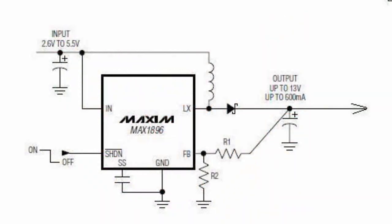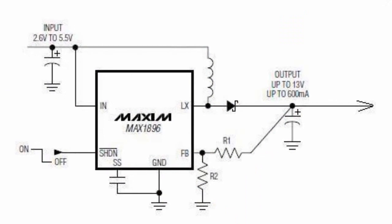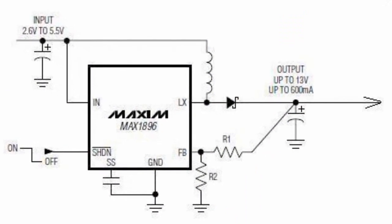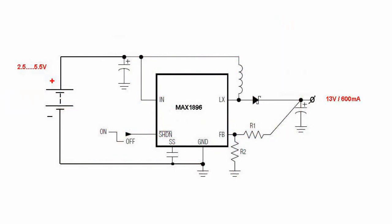Max 1896 DC transformer is intended for using in portable equipment with battery supply. Input voltage range is from 2.5 to 5.5 volt under output voltage of up to 13 volt.